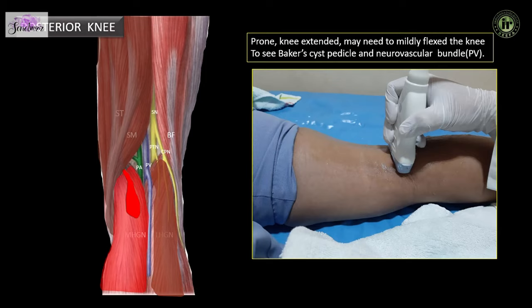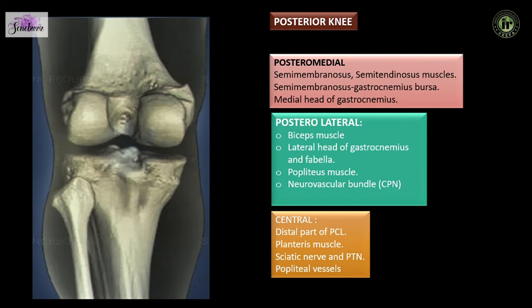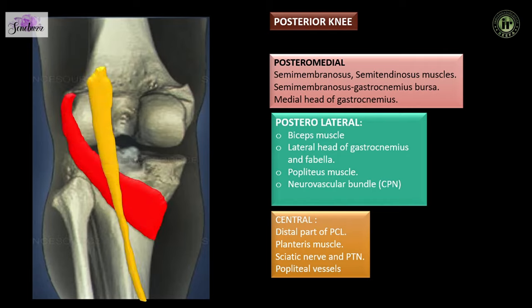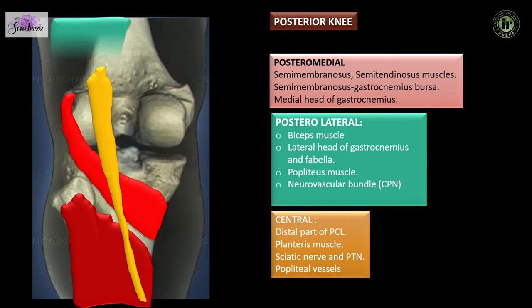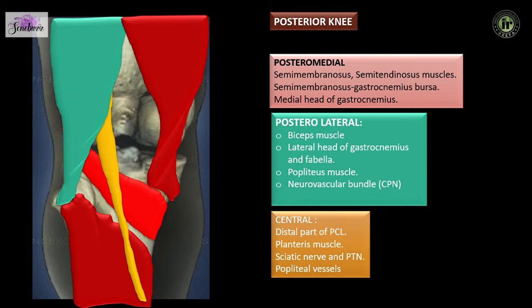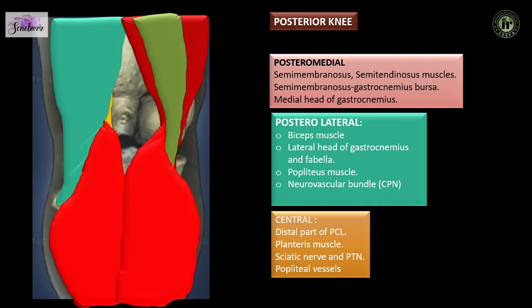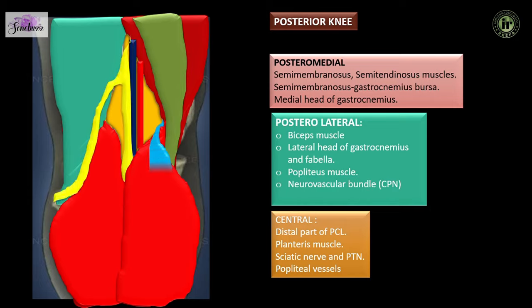For the posterior knee, the patient lies prone with the knee extended, and we start the examination from the lower thigh level. The important structures we are going to see are the popliteus muscle, plantaris muscle, soleus, biceps femoris, semimembranosus, semitendinosus, lateral and medial heads of gastrocnemius, the popliteal fossa with the neurovascular bundle, and of course the semimembranosus-gastrocnemius bursa — the Baker's cyst.